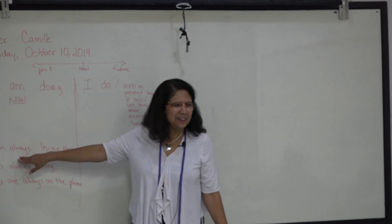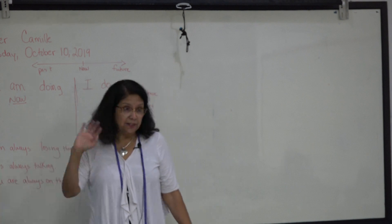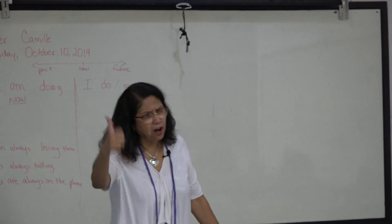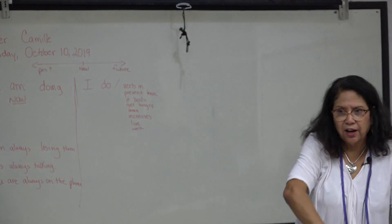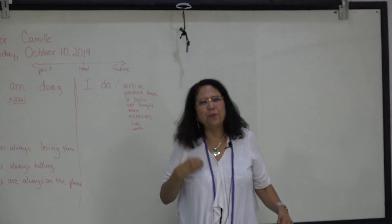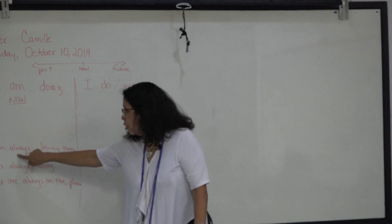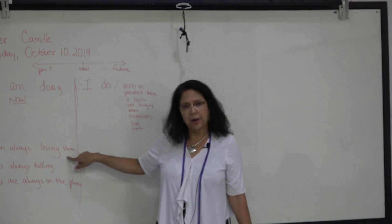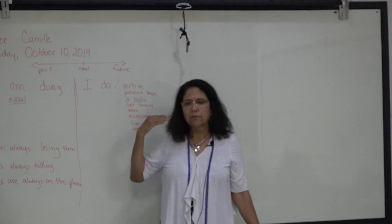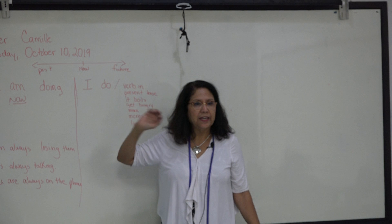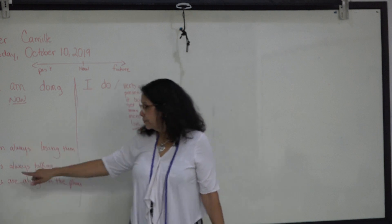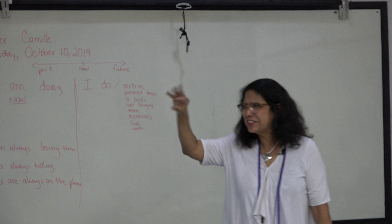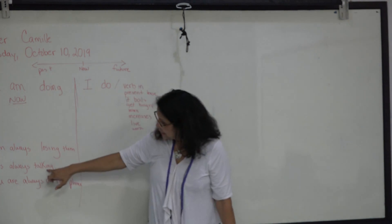In English, we tend to say 'always' even though it's not true, but we say it anyway. Like I tell my children: you're always on the phone, get off. You're always watching TV, shut the TV off. They're not always watching TV, but we say it in English. So when you use 'always,' you will use the 'ing.' I'm always losing my keys. My husband is always losing his car keys. He's always talking. In English, we use the 'ing.'